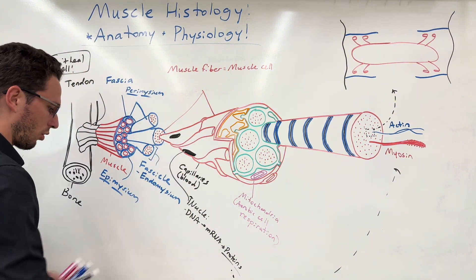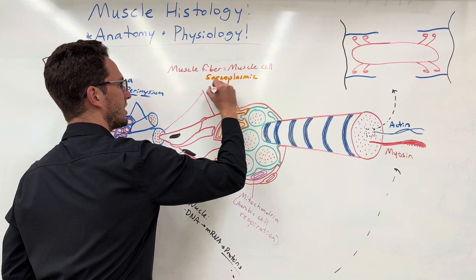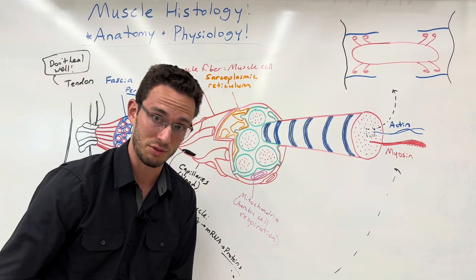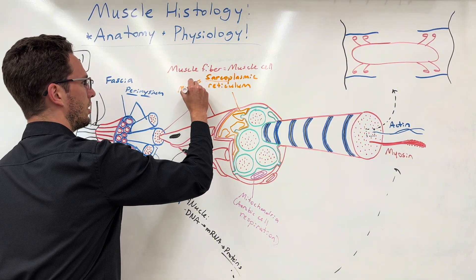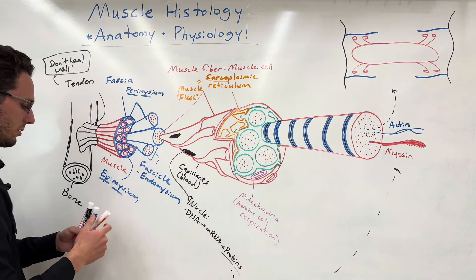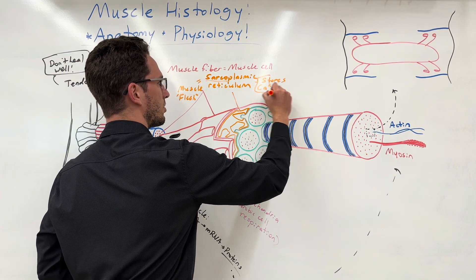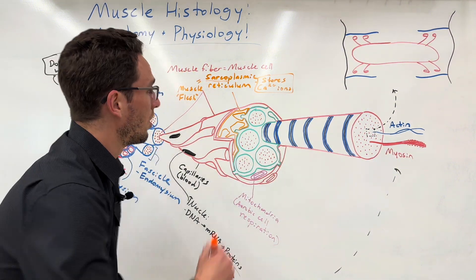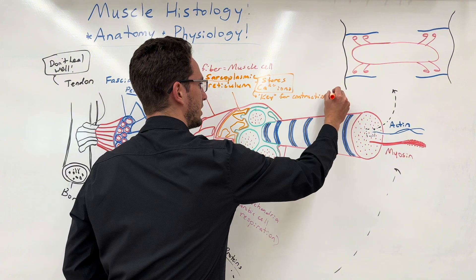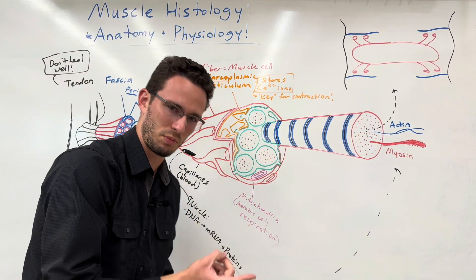Another important organelle is the sarcoplasmic reticulum — basically the specialized form of endoplasmic reticulum for muscle. 'Sarco' means flesh, and we use it synonymously with muscle. The sarcoplasmic reticulum stores calcium ions. Calcium is the key for contraction: whenever the sarcoplasmic reticulum releases calcium into the sarcoplasm — the fluid-like interior of the cell — the muscle contracts. So remember: if calcium is present, muscle contracts.